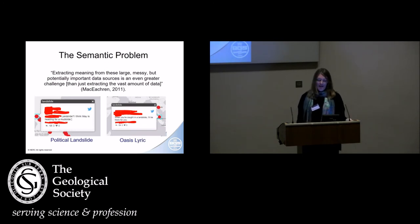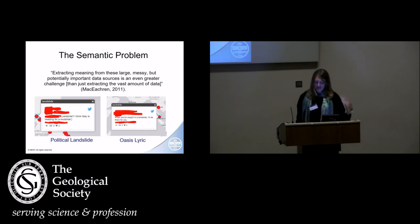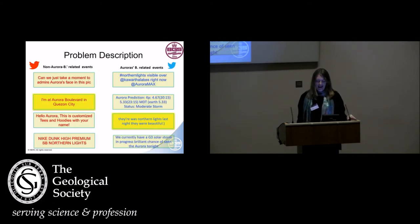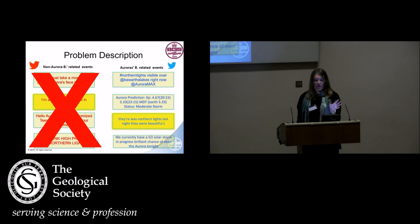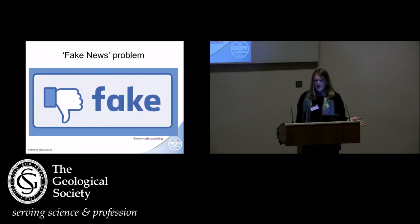The semantic problem — the meaning. Extracting meaning from these large, messy data sets is perhaps the biggest problem. With landslides, we're talking about political landslides, and we quite often get the Oasis lyric coming up. You try and filter these out but they keep coming back. With the aurora too, there are things we're not interested in, so we have to address the problem — and we're moving on to machine learning here: what text means something to this application? There's also the fake news problem — is what we're displaying rumour, hearsay, or is it actually real? I don't know how we really tackle that one with this application at the moment, but it's something we have to be aware of when using this system.